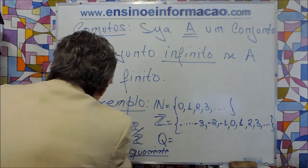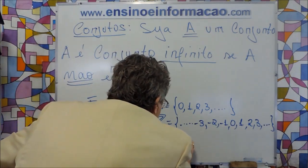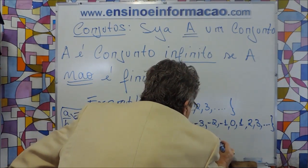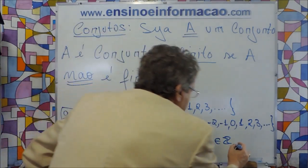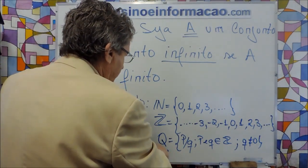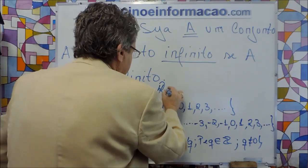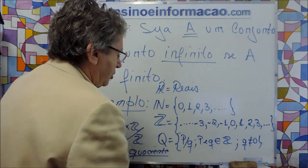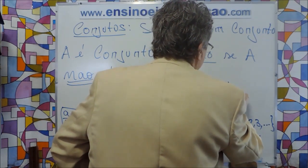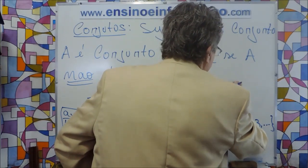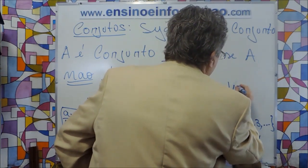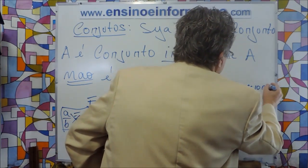Q é o conjunto das frações — na verdade é o conjunto de todos os p/q onde p e q pertencem a Z, com q diferente de zero, pois q não pode ser zero. Os conjuntos reais R: é o conjunto dos racionais mais os irracionais, igual a Q unido com o conjunto dos irracionais.